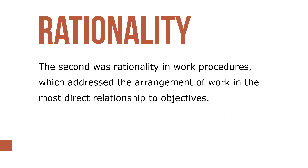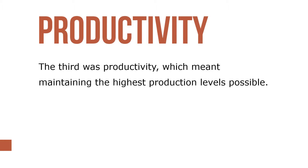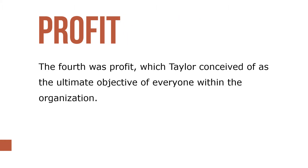The second was rationality in work procedures, which addressed the arrangement of work in the most direct relationship to objectives. The third was productivity, which meant maintaining the highest production levels possible. The fourth was profit, which Taylor conceived of as the ultimate objective of everyone within the organization.